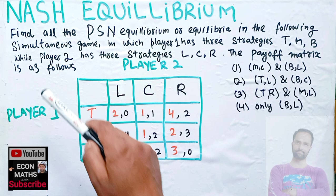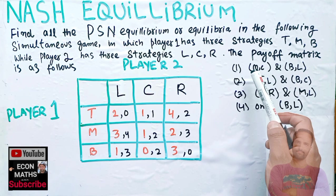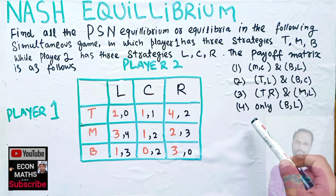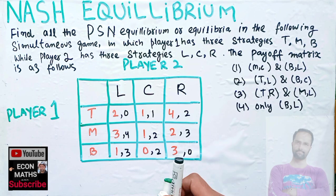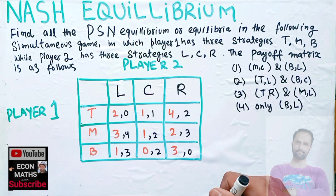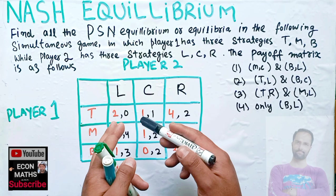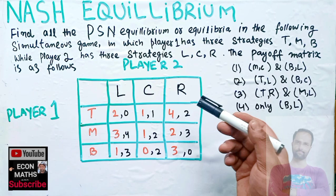We are given this payoff matrix and we need to find the Nash equilibrium. The options given are ML and TR, TL and BC, or only BL. Nash equilibrium states that a player can achieve the desired outcome by not deviating from their initial strategy. Each player's strategy is optimal when considering the decisions of other players.